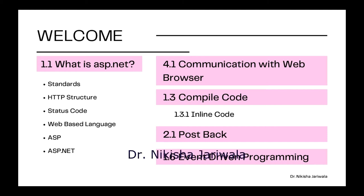After that we will see 4.1, that is communication with web browser. After that we will start with 1.3, that is compile code — code behind and inline code, we will see both things. Then 2.1, that is post-back, and after that we will see 1.6, that is event-driven programming. So students, this is the sequence by which we will start our subject.